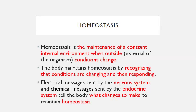Electrical messages sent by the nervous system and chemical messages sent by the endocrine system tell the body what changes to make to maintain homeostasis.